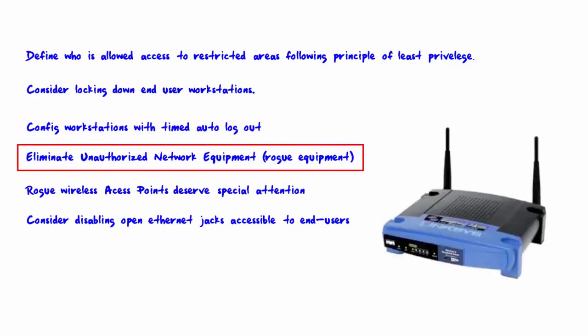Eliminate unauthorized network equipment — that is, rogue equipment. The most common type will be end users who install a device for convenience or fun, not realizing the security problems it can cause. They don't realize they could be creating a back door into the network. The first step is to make sure your AUP clearly addresses what is and is not allowed to be installed on the network, and make sure end users are educated about this. More technically advanced users seem to pose a bigger problem. There is also the possibility that rogue equipment may be installed by black hats with malicious intent.